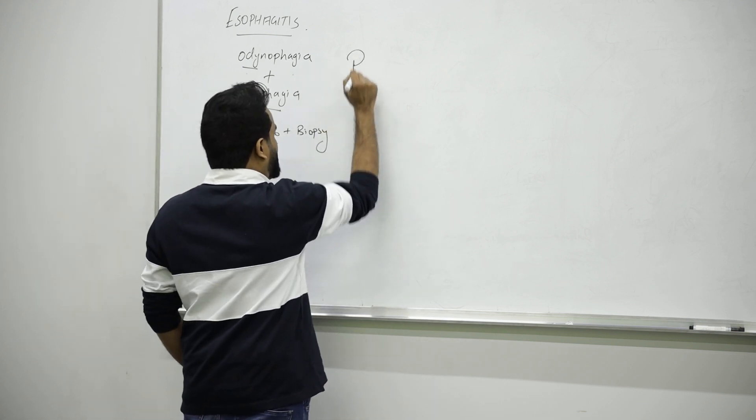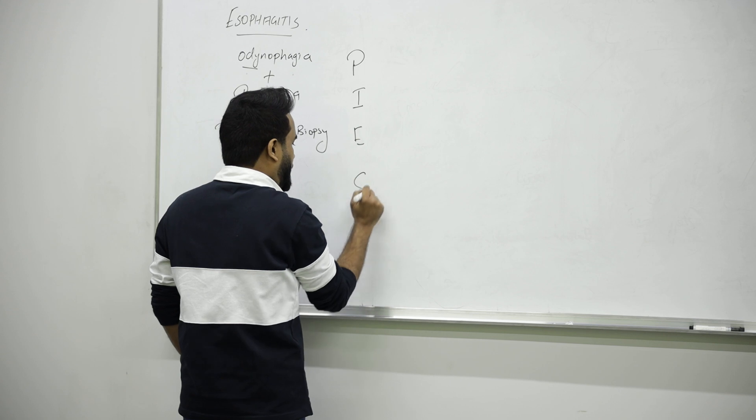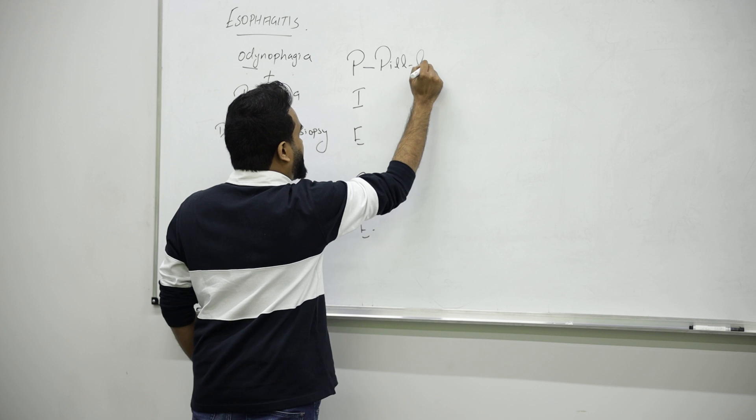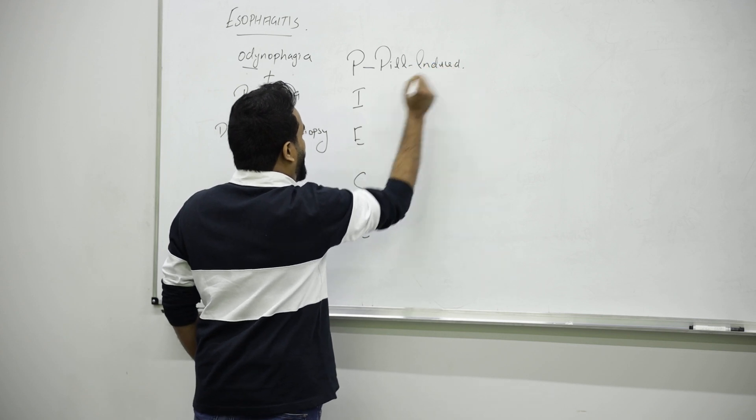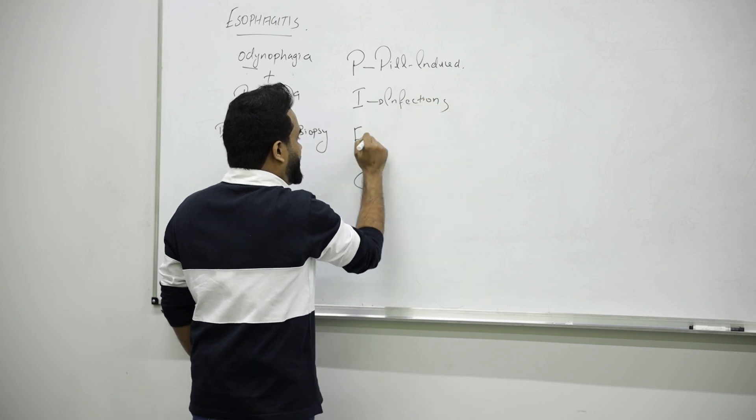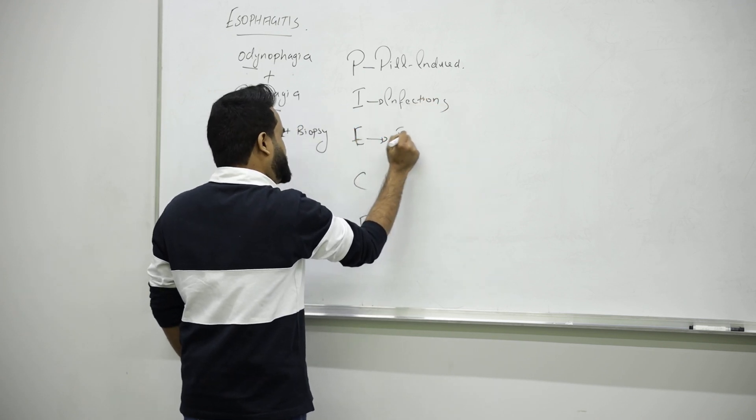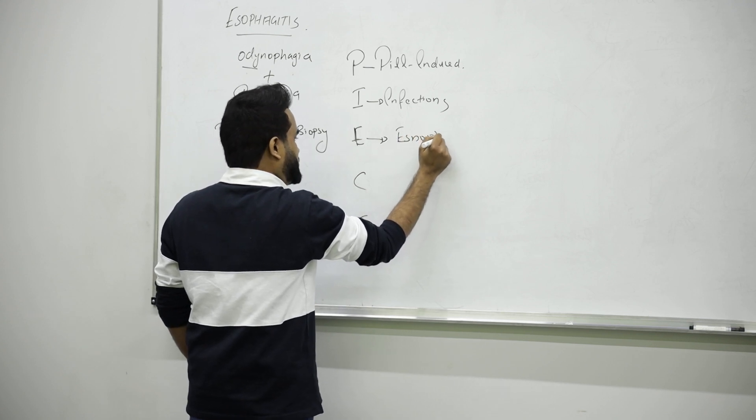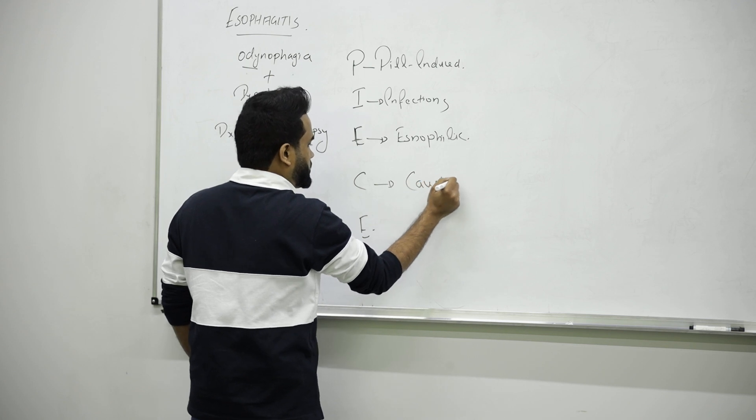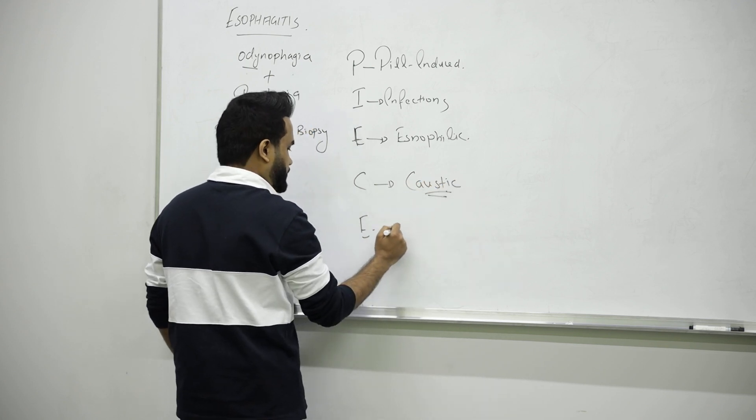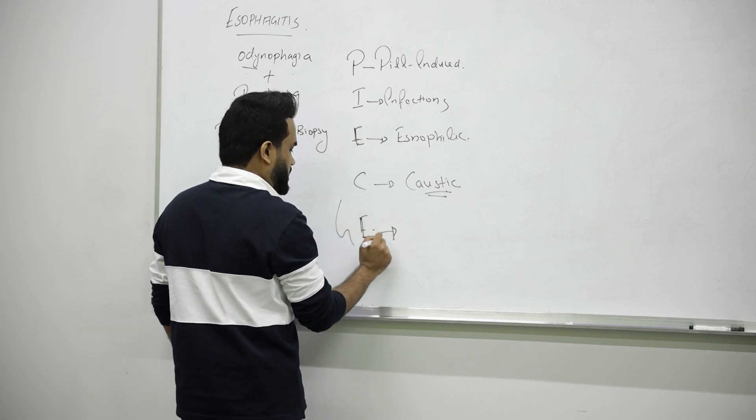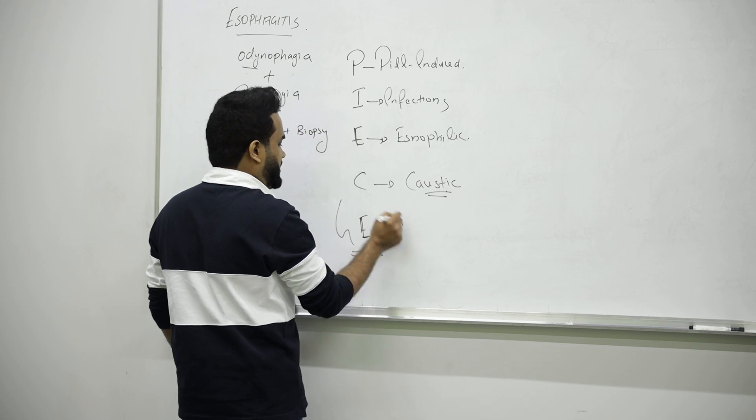There are many reasons. Remember the mnemonic for the lifetime: PEACE. P for pill-induced, E for infections, A for eosinophilic esophagitis, C for caustic resistance like alkali, and E for GERD - gastroesophageal reflux disease.